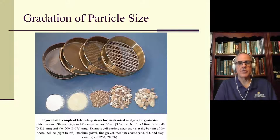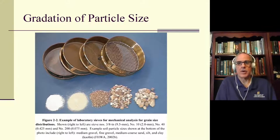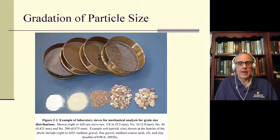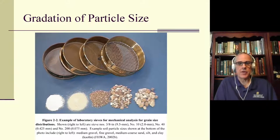The sieve on the right is a 3/8 inch, which means the holes in the mesh are more or less 3/8 inch in size. The concept is that particles smaller than 3/8 inch will pass through. The next is the number 10, which has 2 millimeter openings. Then the number 40, which is very important. And the number 200 on the far left, which is also very important. They also show you the kind of particles you would expect at or near those particle sizes.